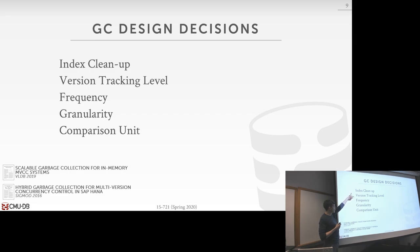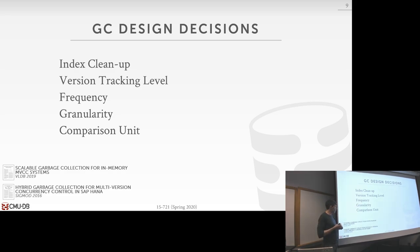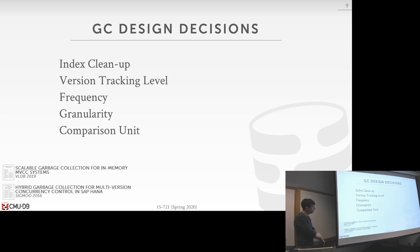We'll talk about how we track versions, the frequency at which we invoke garbage collection, the granularity at which we look at potential versions to remove, and how we determine whether it's okay to prune them.